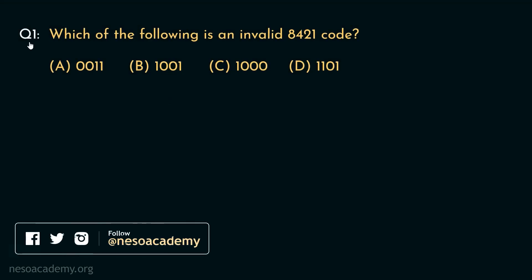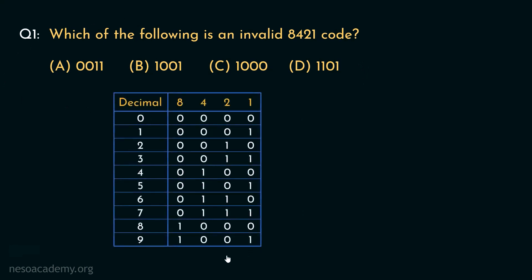Consider the first question: which of the following is an invalid 8421 code? So these are the options given. In the previous session, we observed the chart for the 8421 codes. We will take all the options one by one and judge whether they are available in this particular chart. Coming to the first option A, it gives us 0011. If you observe this particular chart, you can see the symbol 3 in decimal is actually encoded using this particular code 0011. So yes, this is available and it's a valid 8421 code.